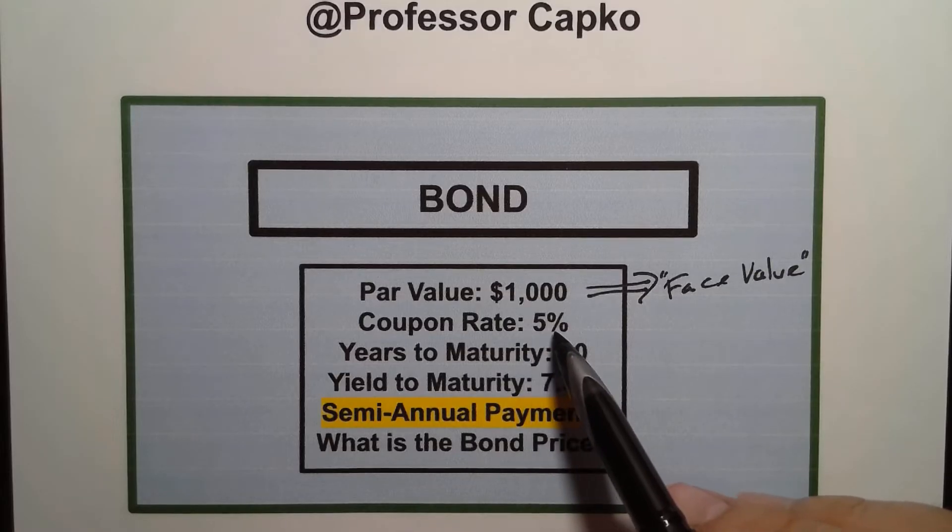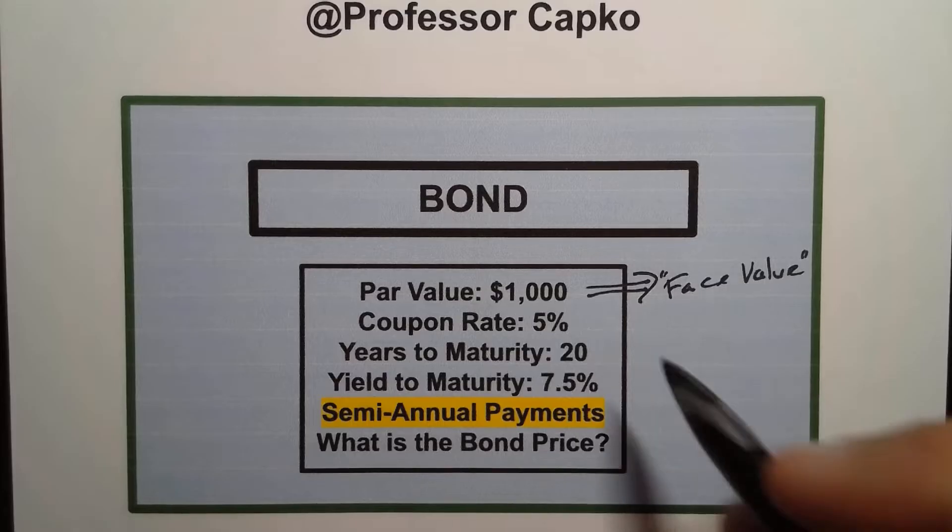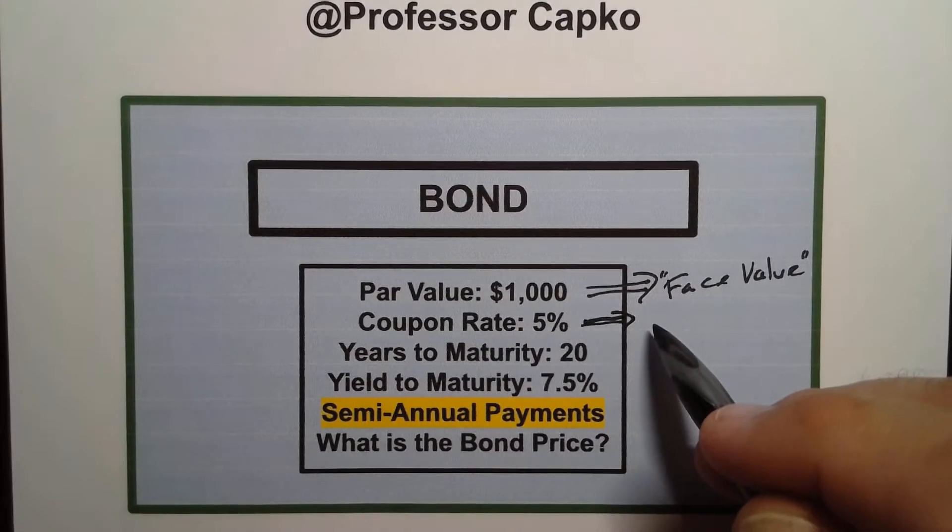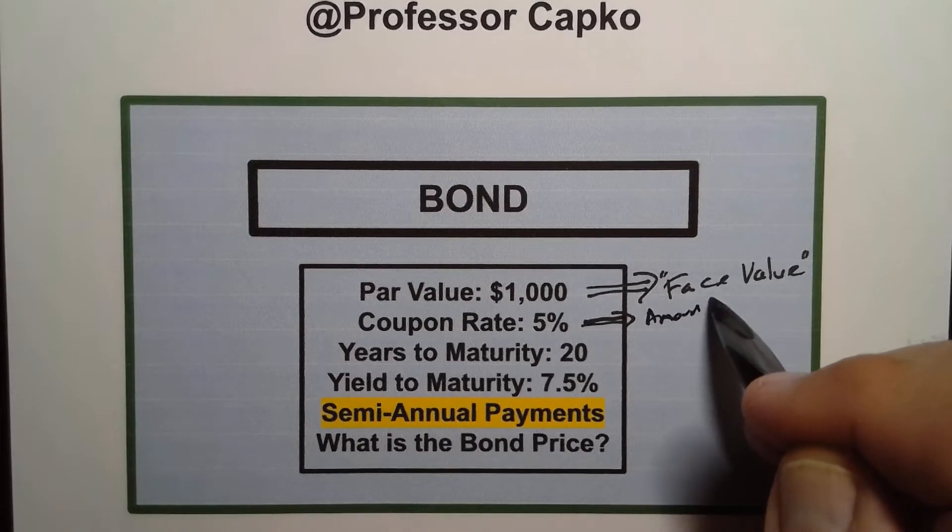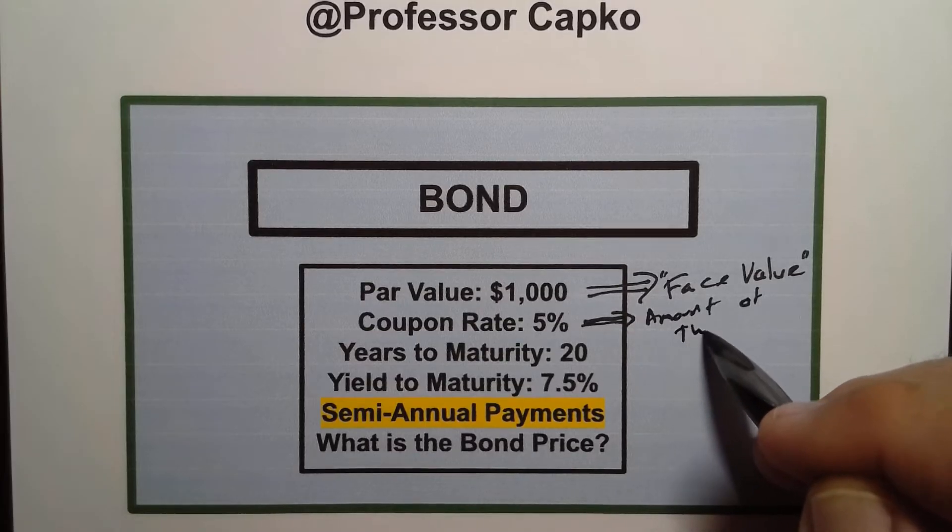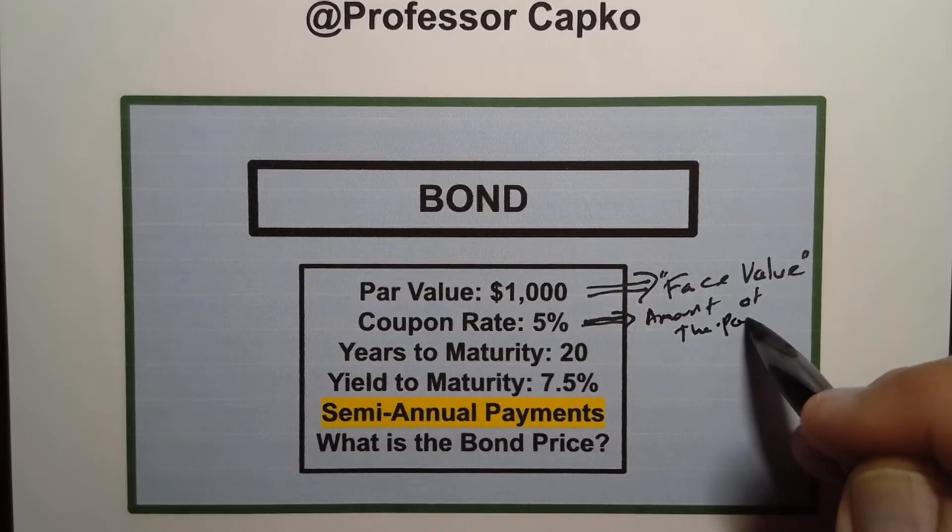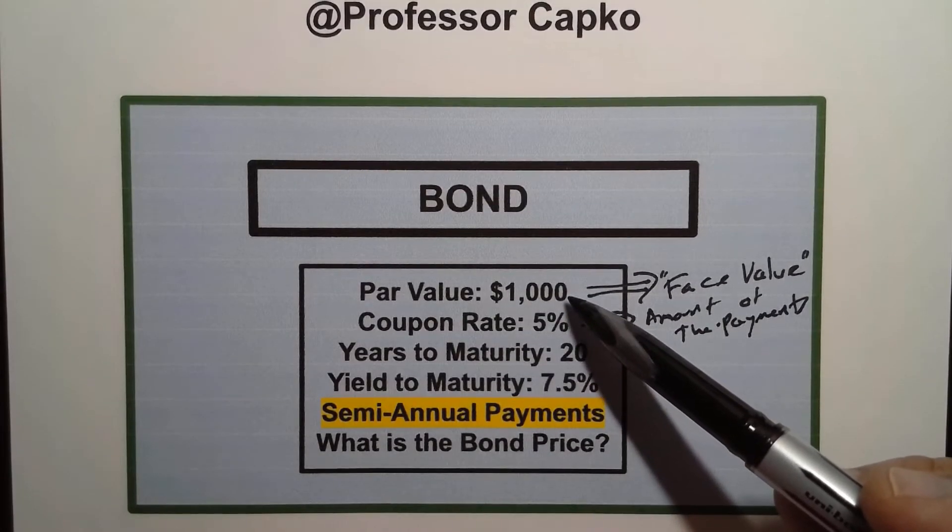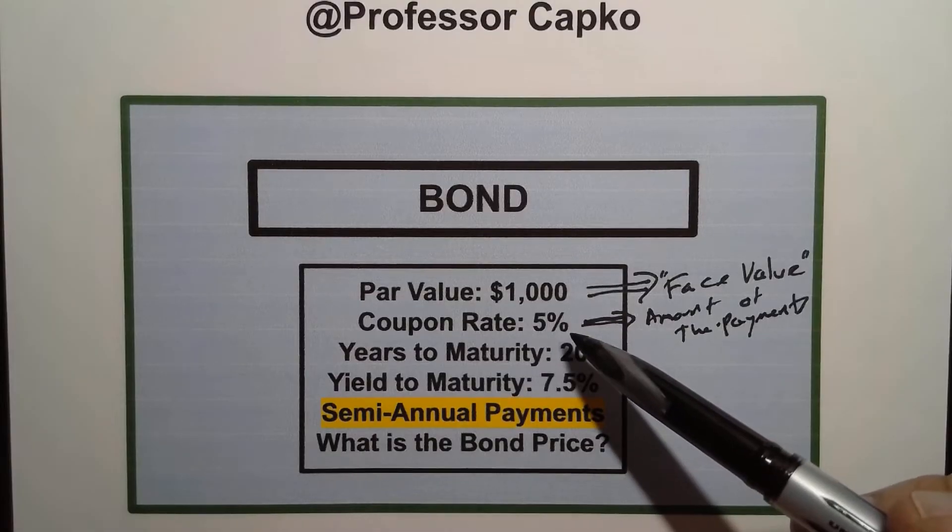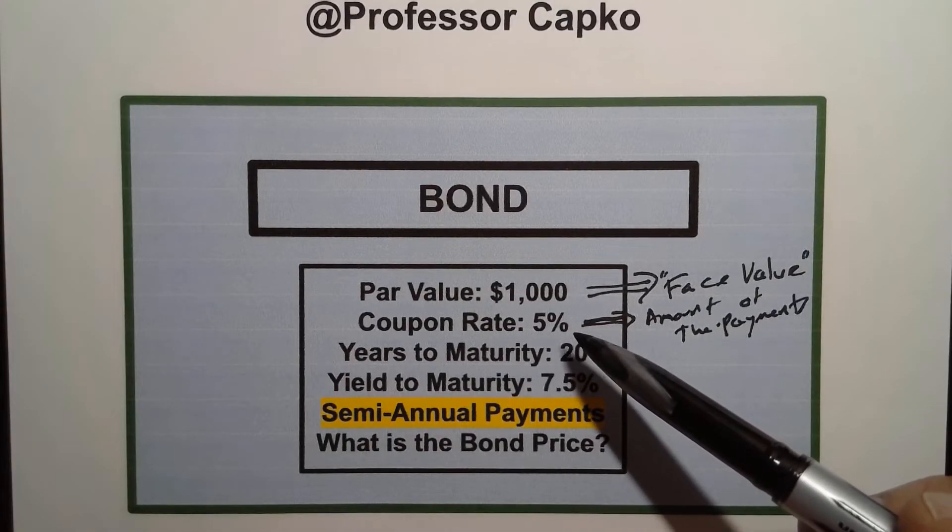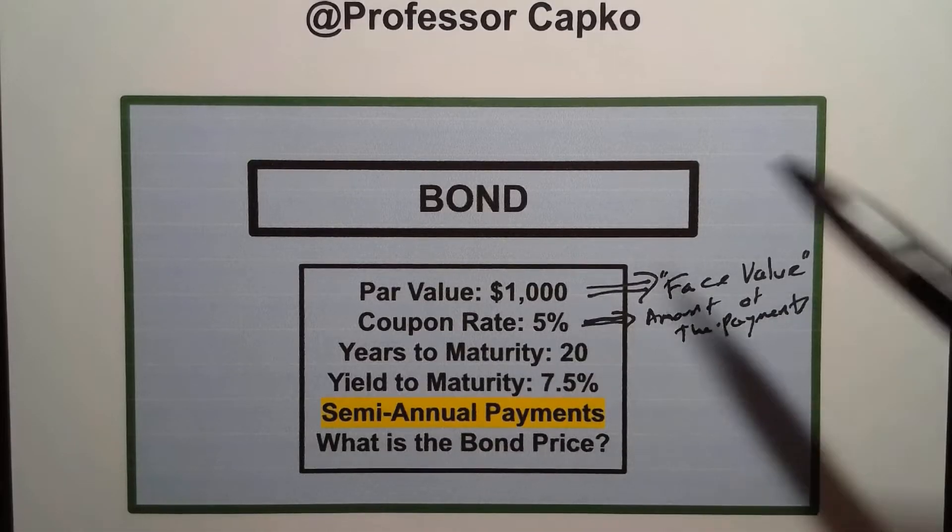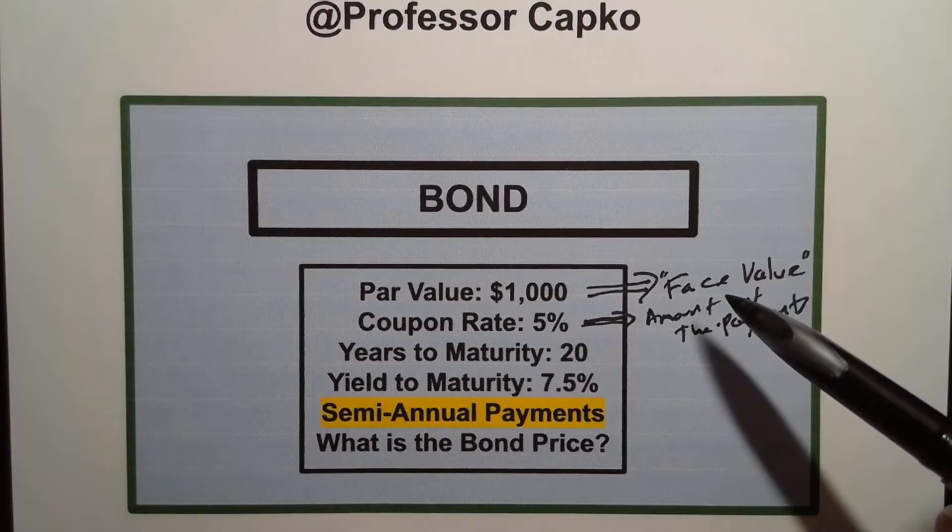The coupon rate in this case is 5%. That is the amount of interest being paid by the bond, the amount of the payments. And what is going to occur is that when you invest in this bond it's going to make the coupon payment to you every time it's due until maturity and at that time you'll receive the par value the face value.